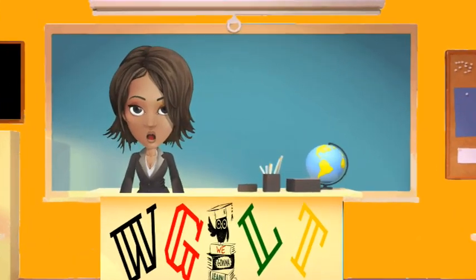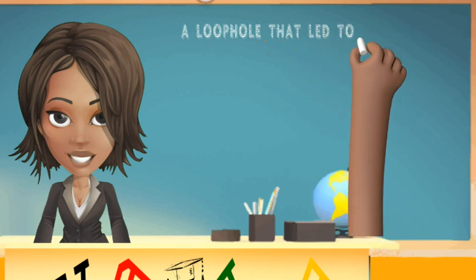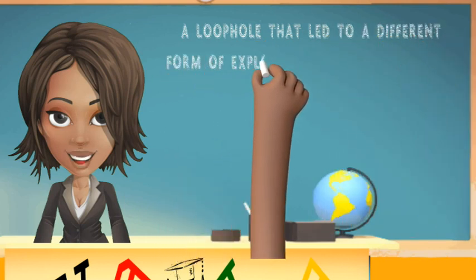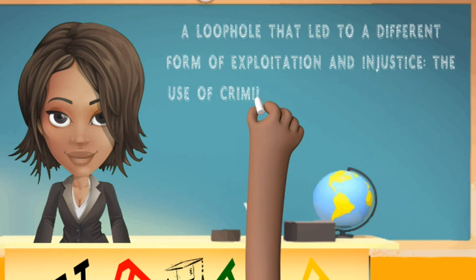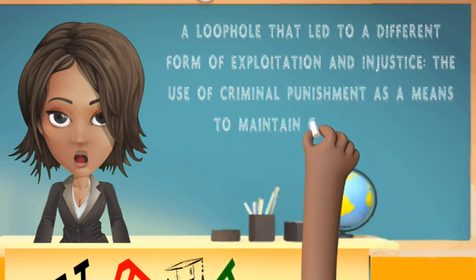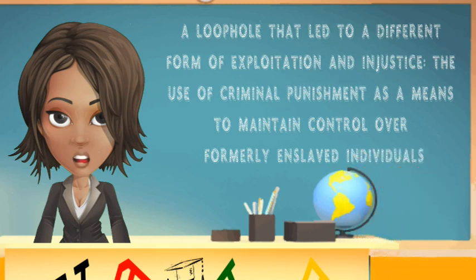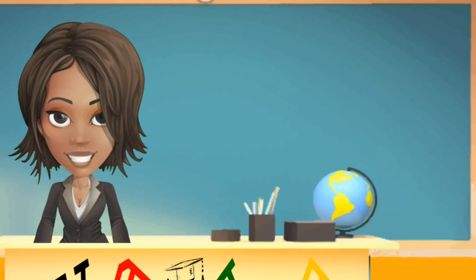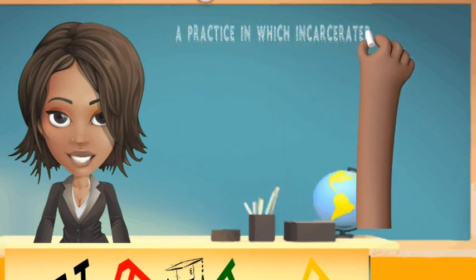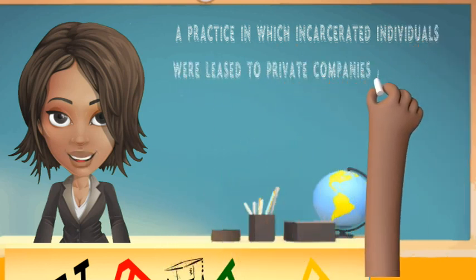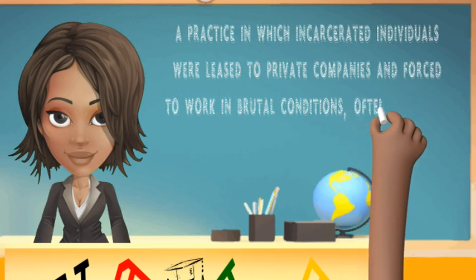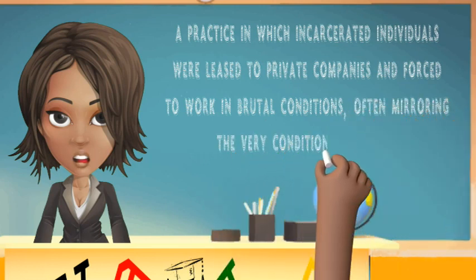However, while the amendment marked a significant step forward, it also contained a loophole that led to a different form of exploitation and injustice — the use of criminal punishment as a means to maintain control over formerly enslaved individuals. The phrase 'except as punishment for crime' created a legal avenue for involuntary servitude to persist in the form of convict leasing, a practice in which incarcerated individuals were leased to private companies and forced to work in brutal conditions, often mirroring the very conditions of slavery.